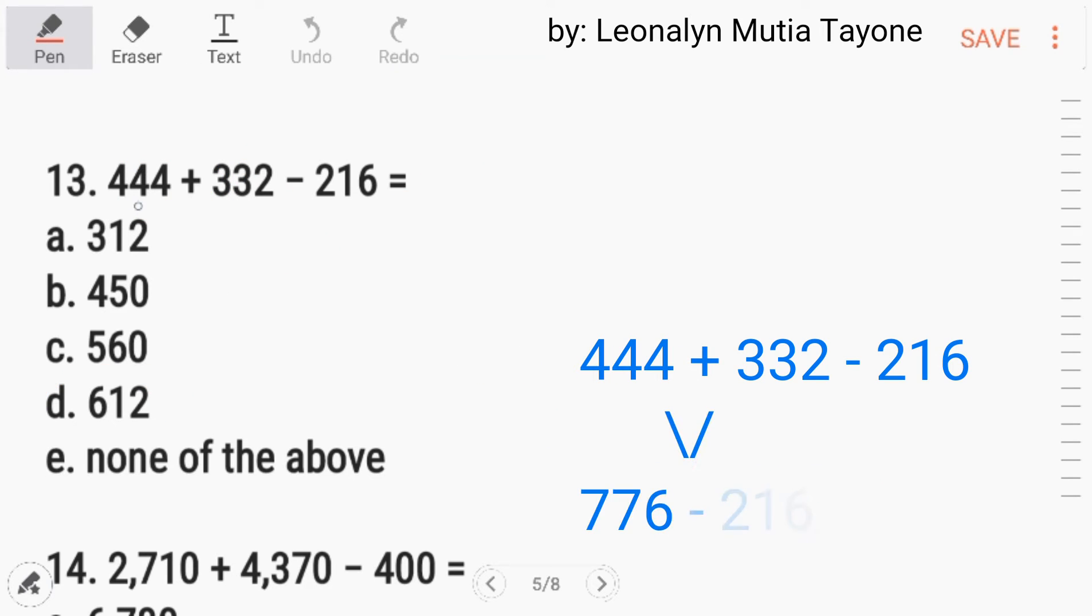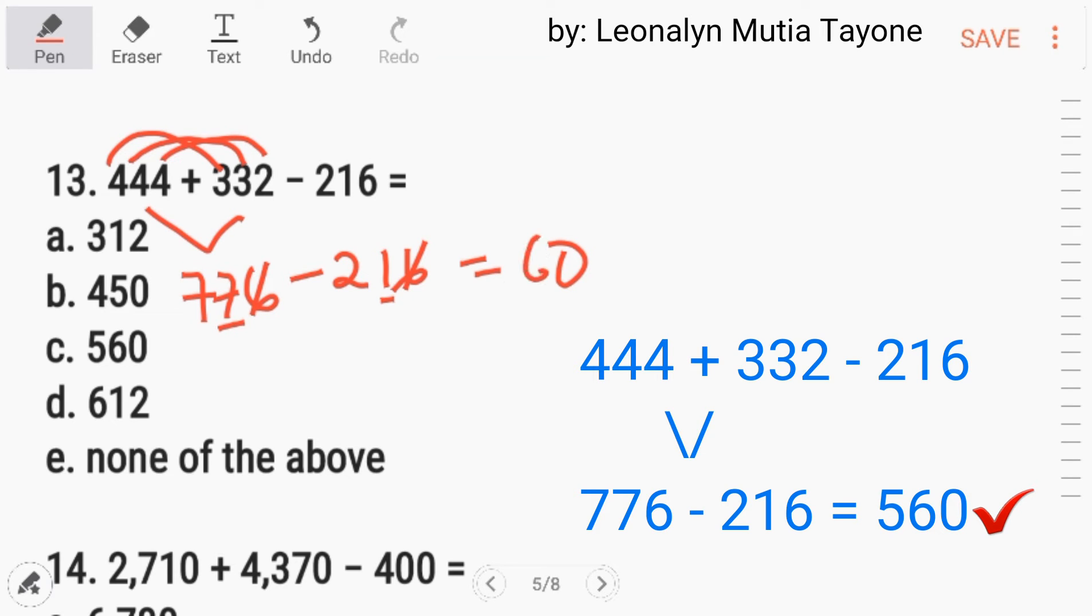Number 13, 444 plus 332 minus 216. Dalawa pa rin ang operation. So we will follow the order of operation. Addition ang nauna. So unahin natin ang addition. Kung i-add natin ito, unahin natin dito. And that is 6. Next is 7. And this is 7. Minus 216. So kung i-minus mo yung 216, itong last, 0 na siya. 7 minus 1 and that is 6. 7 minus 2 and that is 5. So the answer is letter C, 560.